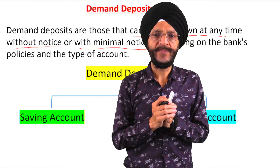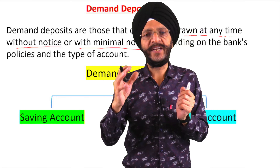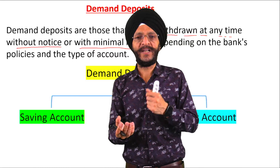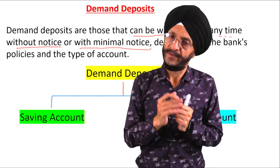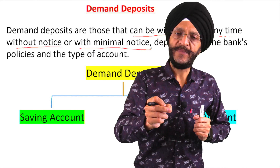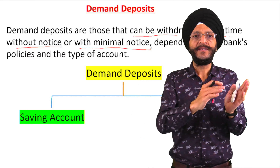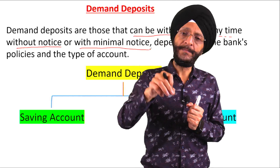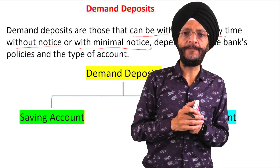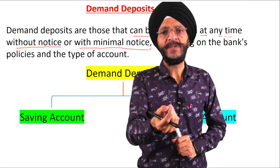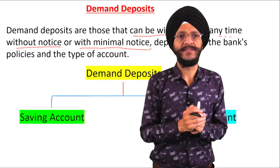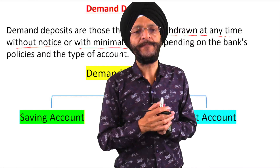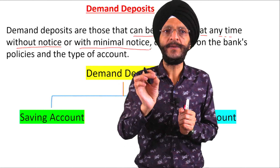Suppose we go to the bank and we have deposited $1 million with the bank and we say 'pay me in cash.' The bank will immediately pay you if you have a savings or current account. But it may be possible that they may not have cash at that moment. They will ask for some time — 30 minutes, 1 hour — so that they can arrange funds. These are demand deposits where you can withdraw your money at any time without notice or with minimal notice.